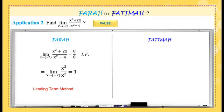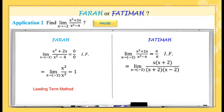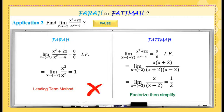While Fatima, she substituted also to get 0 over 0 as an indeterminate form. Then, she factorized the numerator and denominator till she got (x + 2) as a common factor. She simplified till she got the result as half. She used factorize then simplified. Which one is true? Excellent. Farah's way is wrong, while Fatima's way is correct.